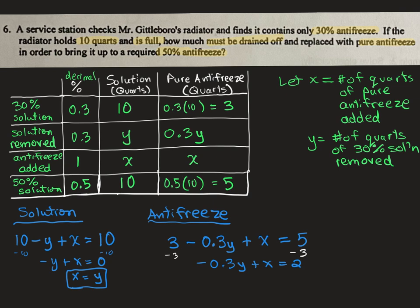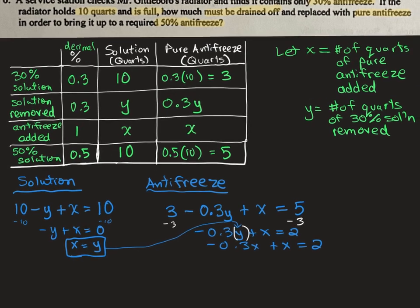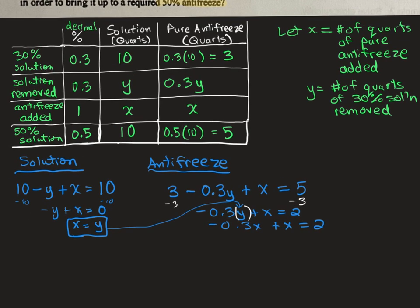And then we can use our other equation and sub in. Let's say we replace y in this equation with the y we have from the other one, which is just x. So we're going to do that. So now that would be negative 0.3x plus the x we already had equals 2. And add those two x terms together, you would get positive 0.7x equals 2.